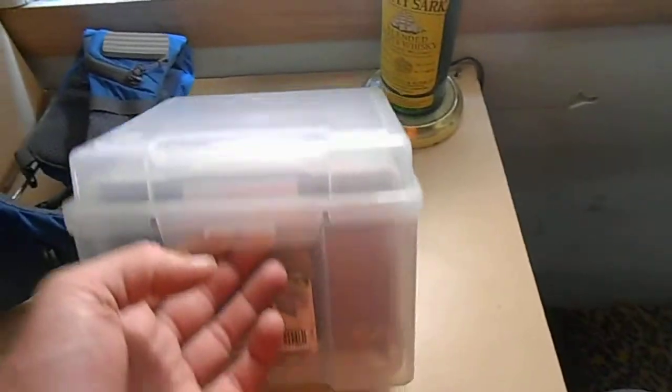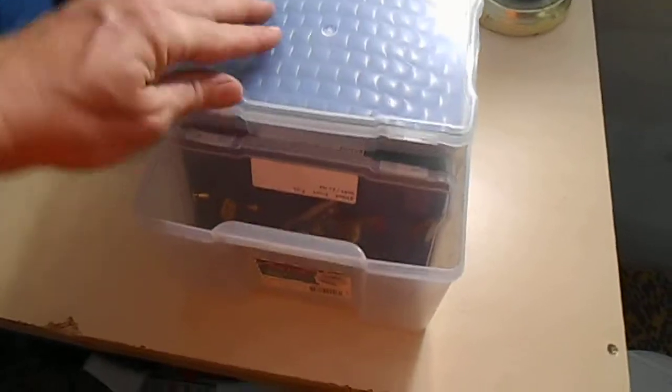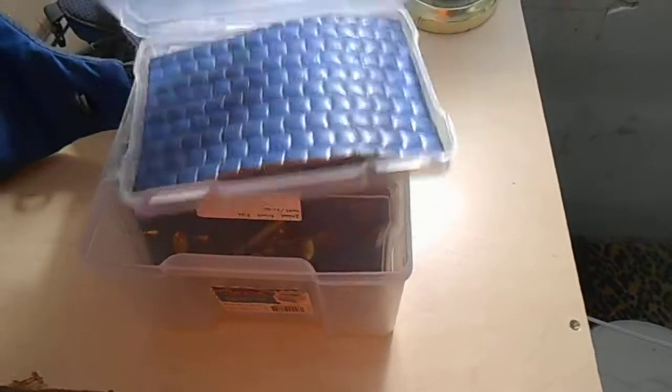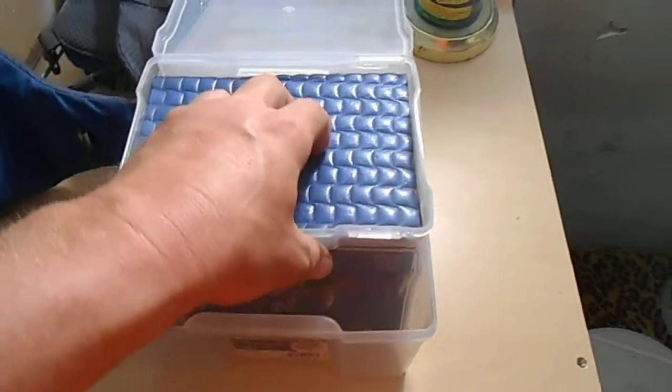This photo storage box was like 10 bucks at Meijer's. What I did is I took some yoga foam, cut it out, and laid it flat in there so my hooks will go into it.